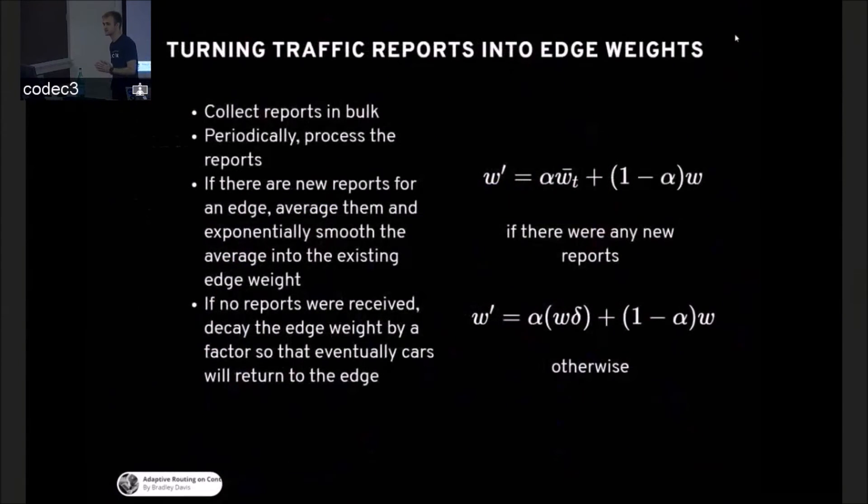So how do you turn traffic reports into edge weights? I'm only collecting car A crossed segment A and took 30 seconds. That's the kind of information I'm working with. There's no new traffic signals, no big networks of sensors or anything like that. So you collect the reports in bulk and you process them periodically about as fast as you can contract the graph. If there's a new report for an edge, you can use exponential smoothing. This is a very simple model that could be replaced by something more complicated. But what I did is exponentially smooth it with a given factor. So if it were 50%, the new weight counts for 50%, and all the history of the old weight becomes 50%. And there's one more thing that's important. If we don't get any reports, we don't have any sensors to see what's happening on the road. So we have to assume that things are getting better. So we decay an edge weight in the absence of reports so that eventually another car will be routed along it and report back the conditions.